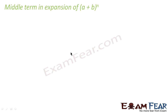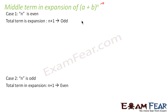Now let's find the middle term of the expansion. In case we have (a + b) to the power n and n is even, the total number of terms is n plus 1, which is odd — because even plus 1 gives odd.